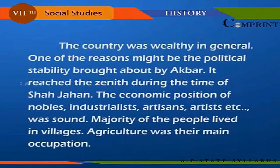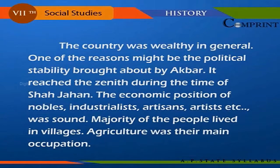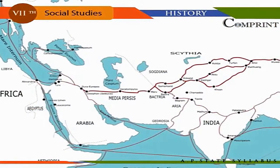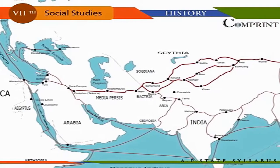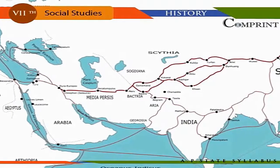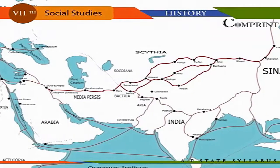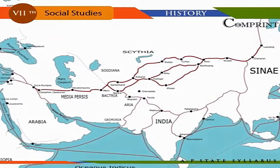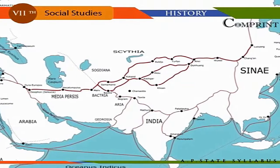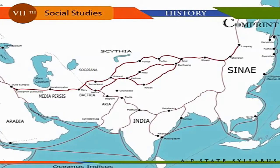Economic Conditions. The country was wealthy in general. One of the reasons was the political stability brought about by Akbar. It reached its zenith during the time of Shah Jahan. The economic position of nobles, industrialists, artisans, and artists was sound. Majority of the people lived in villages, and agriculture was their main occupation. Wheat, barley, sugarcane, rice, indigo, cereals, maize, jute, etc. were grown. It was during the time of Sher Shah that commercial activity increased. He abolished a number of taxes on traders. Grand trunk roads were laid and sarais were constructed on the way, serving as post offices also.